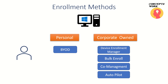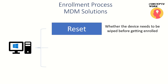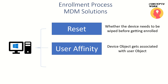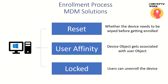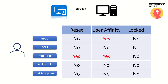I will be covering all these enrollment methods specifically in dedicated videos. But for now, just remember that for Windows, these are the enrollment methods available. Whenever you enroll a device in any MDM solution, there are certain processes that happen under the hood. The first is whether a specific enrollment method requires your device to be reset. Then there is something called User Affinity, wherein the device being enrolled gets associated with your user object or not. The last setting is LOCKED — once you have enrolled your device, whether you will be able to unenroll it or not. All three components have their own purpose depending on the enrollment method you choose.